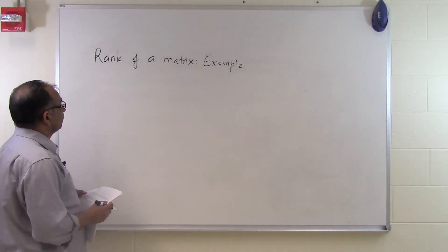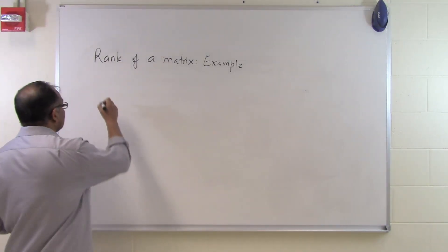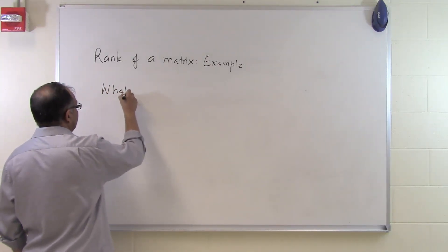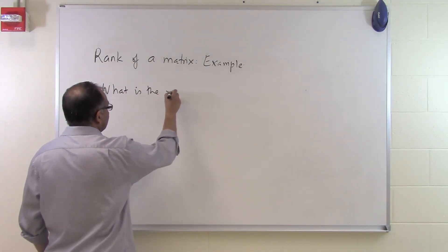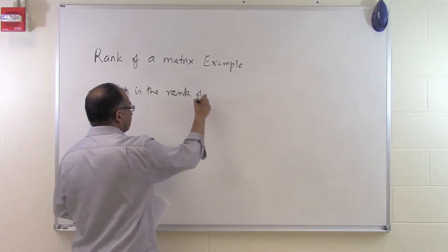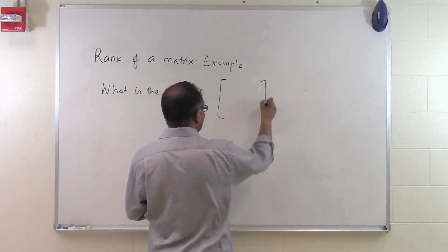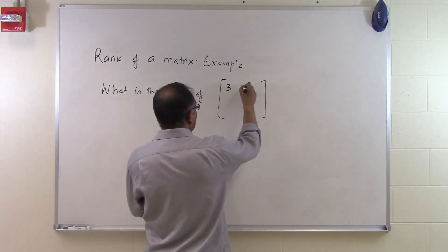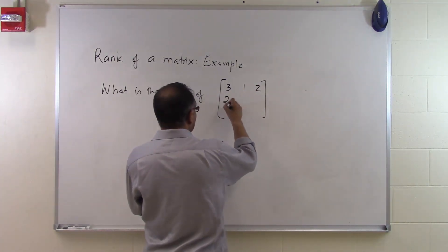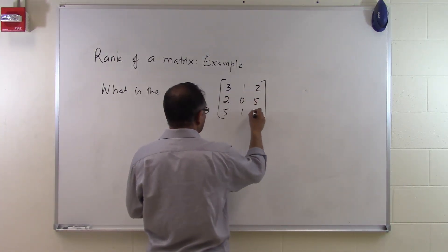In this segment we will look at an example of finding the rank of a matrix. Let's suppose the problem statement is what is the rank of this matrix right here: 3, 1, 2; 2, 0, 5; 5, 1, 7.